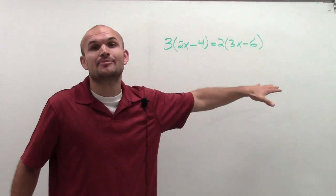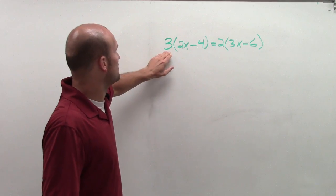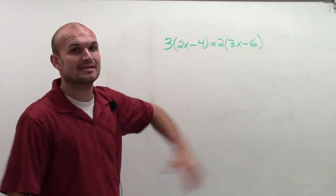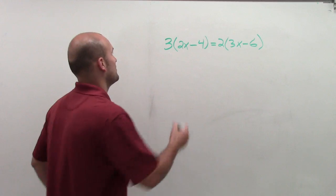Since we can't simplify inside the parentheses, I do notice that I'm multiplying a number times my parentheses, helping me understand that I need to use distributive property.